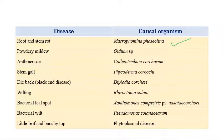Root rot or stem rot is caused by Macrophomina phaseolina. Powdery mildew is caused by Oidium species. Anthracnose is caused by Colletotrichum corcorum. Stem gall is caused by Physoderma corcori. Dieback is caused by Diplodia corcori. Wilt is caused by Rhizoctonia solani. Bacterial leaf spot is caused by Xanthomonas campestris pathovar necata corcori. Bacterial wilt is caused by Pseudomonas solanacearum. Little leaf or Bunchy top is a phytoplasmal disease.